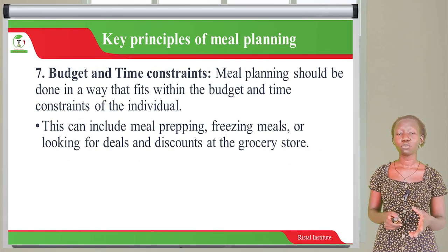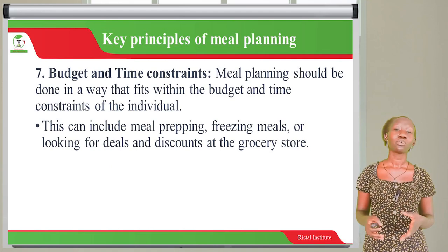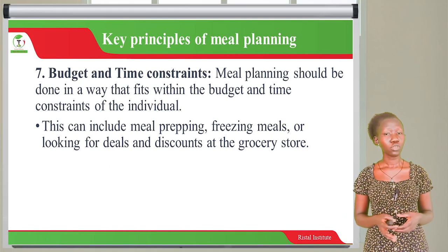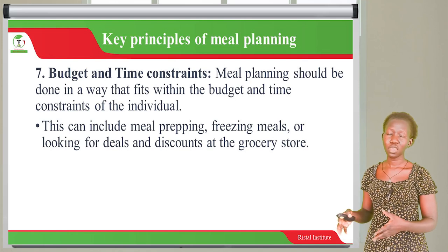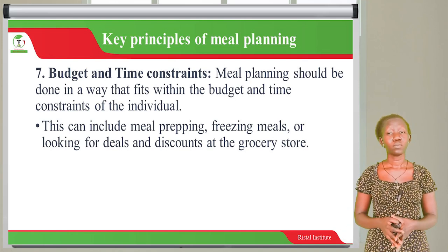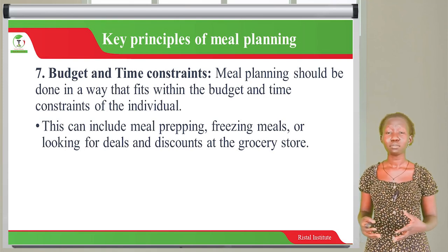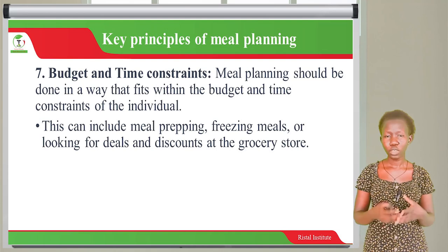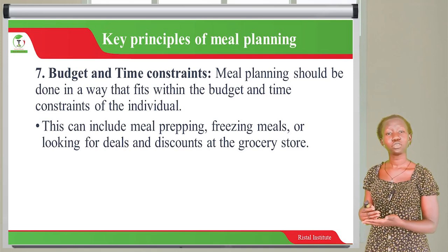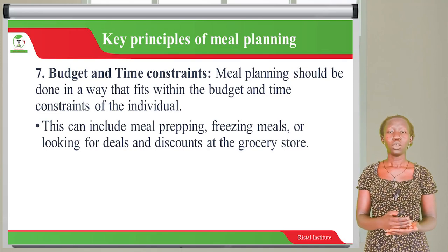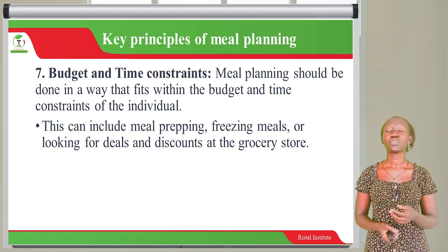And then there are budget and time constraints. You have to know when you are going to consume the meal, but also keep in mind your budget. A person without a stable source of income is not going to exaggerate a meal plan — they work according to what they have. So if you have a fixed amount to prepare a meal for the whole day, you plan it accordingly: plan for breakfast, plan for lunch, and plan for supper. It should be done in a way that fits within the budget and time constraints of the individual.